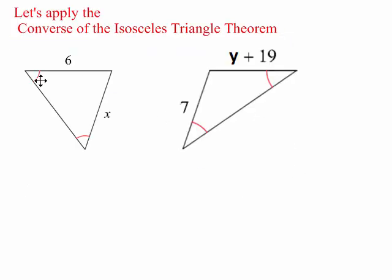All right, let's apply that. Well, if this angle and this base angle, if these two angles are congruent, then these two sides are congruent. So simply said, x is 6.